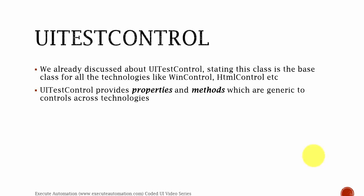UITestControl provides properties and methods which are very generic to controls across these technologies. If you see the base class of UI test controls, you can see there are a lot of methods available which actually support the extending technologies like MSAA, web, or WPF controls. We're going to replace the previous code like win windows or win button to UITestControl and see how things work, because we know that the control's base class is nothing but UITestControl. Let's flip back to Visual Studio and work from there.